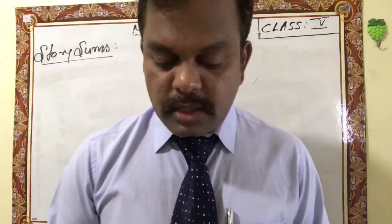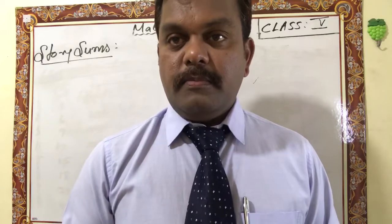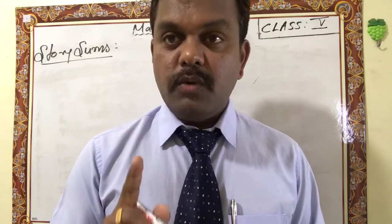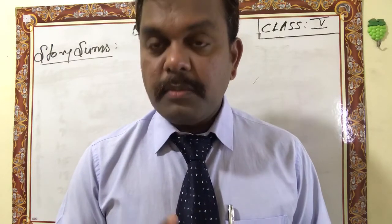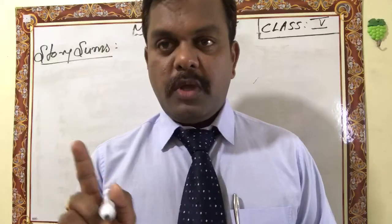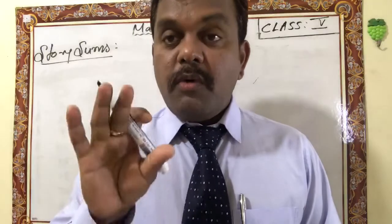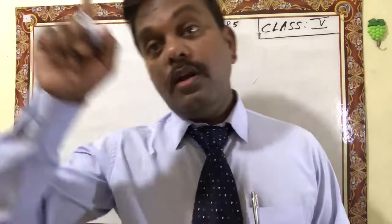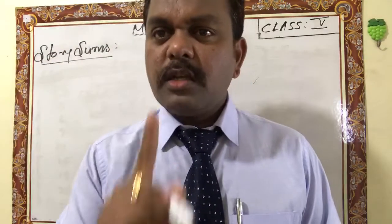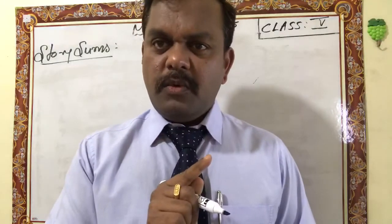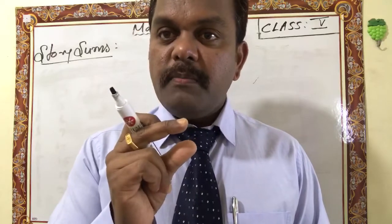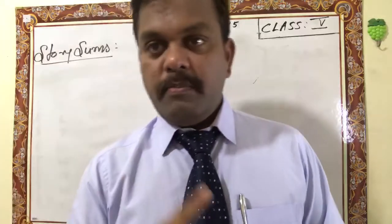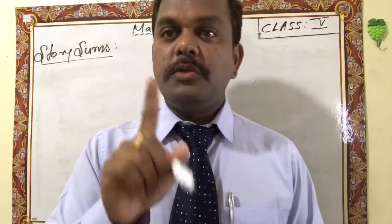In a year he earned 97,080 rupees. What is his monthly earning? One year is given — and one year means 12 months. Maximum number is given, asking only one month — minimum is asking. If minimum number is given and maximum is the question, you multiply. If maximum is given and one is the question, you divide. So this sum we are going to divide.